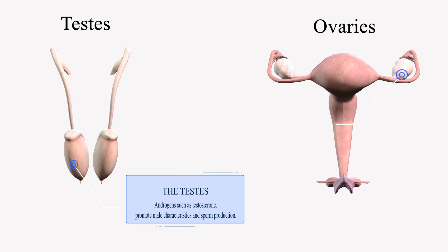And then we have the ovaries for the female. We have important hormones being secreted such as estrogen and progesterone, which is important in female characteristics and egg production.